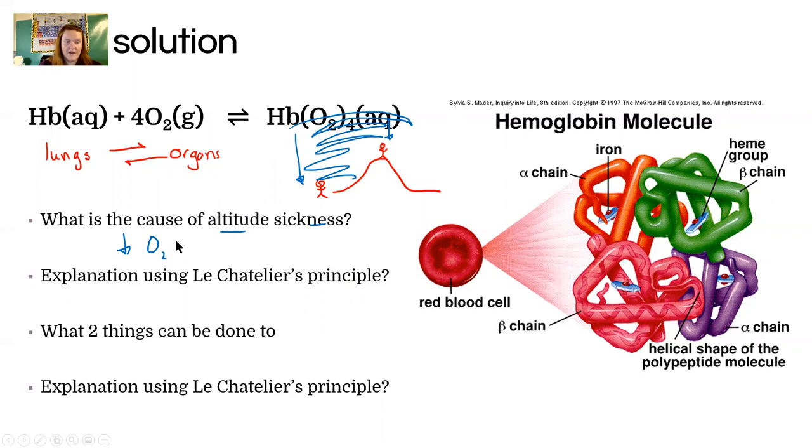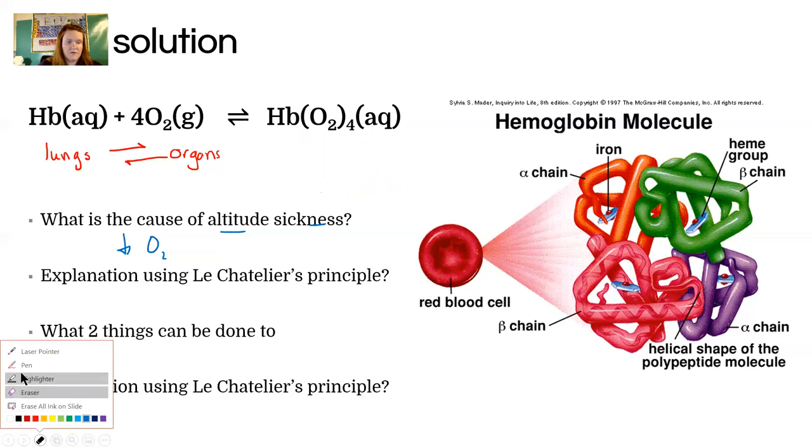And so there's actually two things that you could do to fix this. Mountain climbers for a very long time have used canned oxygen—essentially, they take oxygen tanks up. You can't climb really, really tall mountains without using that. So it's just not enough. You can use tanks to increase the amount of oxygen.